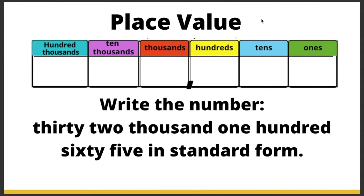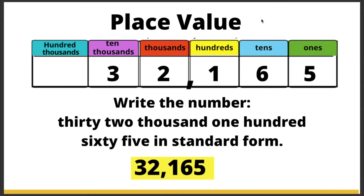Let's write the number 32,165 in standard form. Remember, standard form means only writing in digits. It should look like this: 32,165. The 3 is in the ten thousands place, the 2 is in the thousands place, then there's a comma, the 1 is in the hundreds place, the 6 is in the tens place, and the 5 is in the ones place.